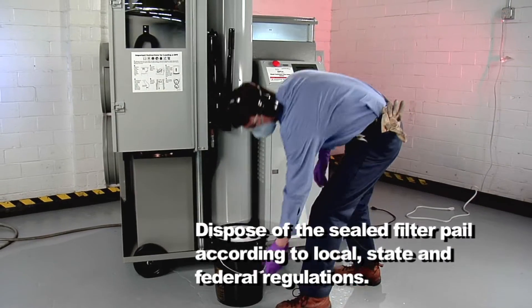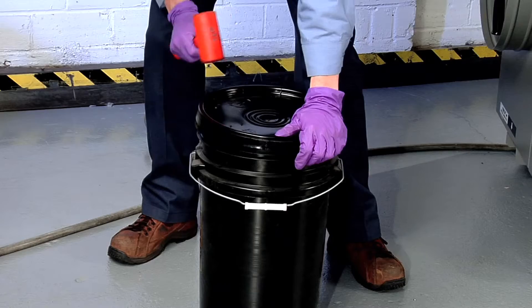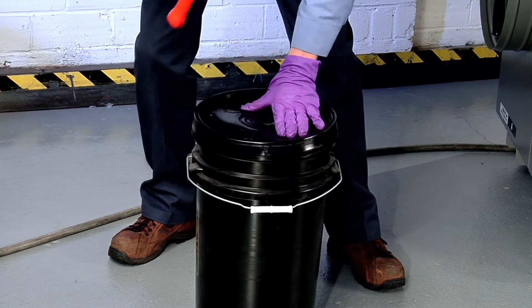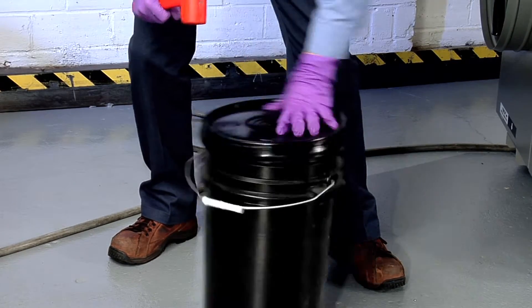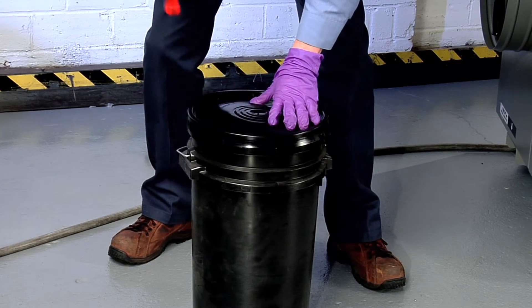Dispose of the sealed filter pail according to local, state and federal regulations. When you purchase the new vacuum filter, it was shipped with a filter cover. Remove the cover from the box and, using a soft hammer, tap the cover onto the old filter pail.